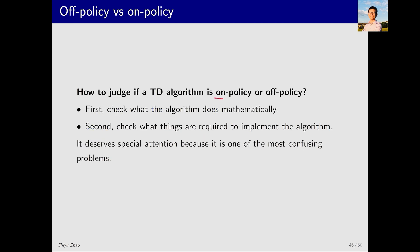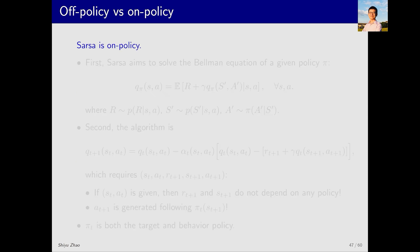How do we determine whether a given algorithm is on-policy or off-policy? There are two ways. First, check what the algorithm does mathematically — each of SARSA, TD learning, and Q-learning solves a specific Bellman equation or Bellman optimality equation. Second, check what experience samples are required by the algorithm. Let's apply this to SARSA, Monte Carlo learning, and Q-learning, starting with SARSA, which is on-policy.